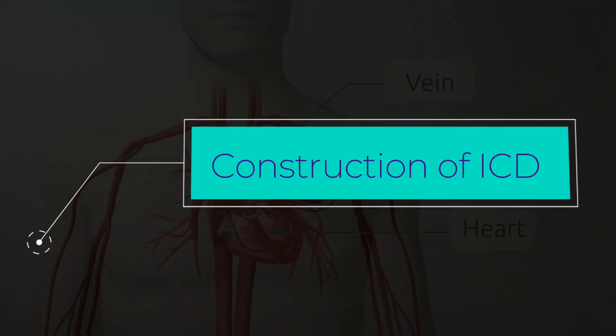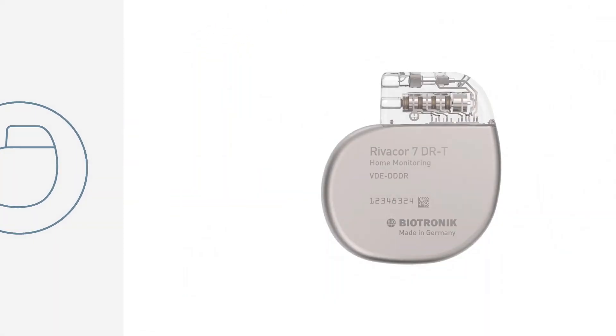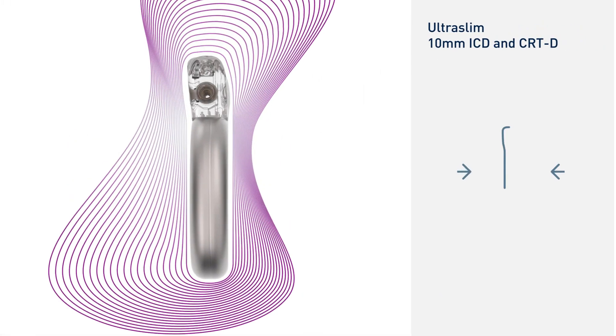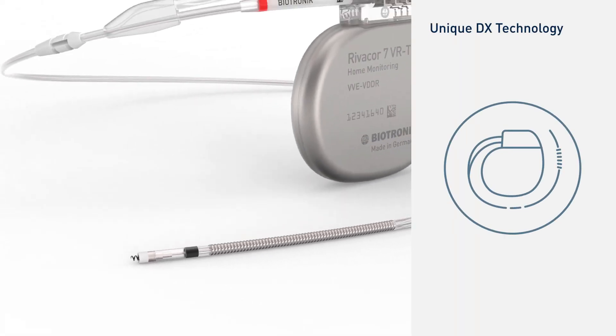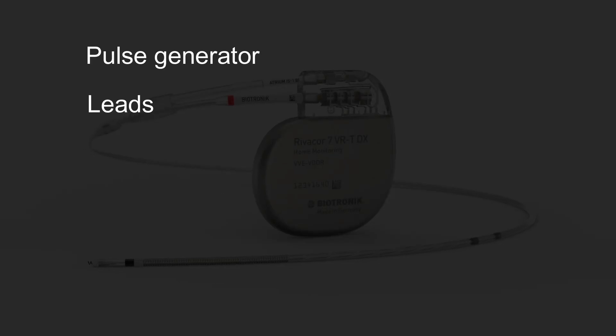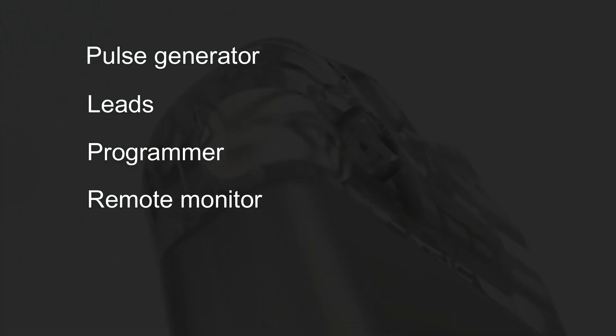Let's look at the construction of an ICD. An implantable cardioverter defibrillator, or ICD, is a combination electrical stimulator and analog instrument with defibrillator tachycardia and pacemaker bradycardia functionality. Like the pacemaker, an ICD has four components: the pulse generator, leads, programmer, and remote monitor.